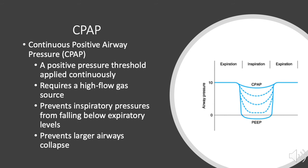CPAP is much like PEEP in that pressure is applied throughout both inspiration and expiration. The pressures applied aim to hold airways open with positive pressure to prevent airway collapse. CPAP uses high-flow gas sources to maintain positive airway pressures. As gas flow increases, PEEP actually becomes CPAP. CPAP is often used to assist emphysema patients with eliminating excess carbon dioxide, since it prevents the larger airways from closing.